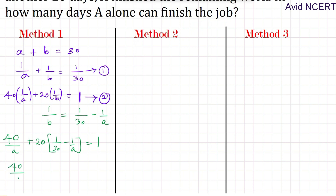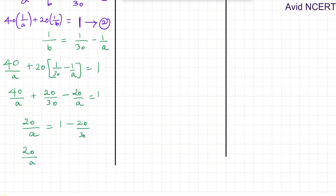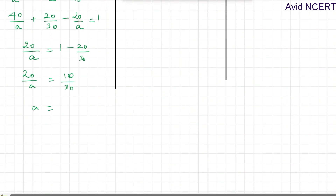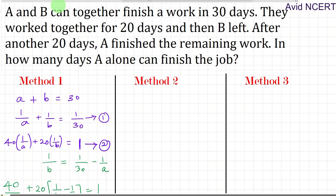So expanding: 40/A plus 20/30 minus 20/A equals 1. Keeping A on one side: 40/A minus 20/A equals 20/A. Then 20/A equals 1 minus 20/30. Taking LCM, that is 10/30. By cross multiplication, A equals 20 times 30 divided by 10, which gives A equals 60 days. So A alone can finish the job in 60 days. This is the first method.